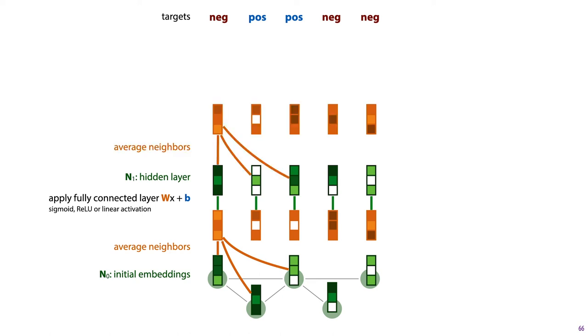We add another convolution layer, so we average over the neighbors again, and we apply another fully connected layer with another set of weights, V and C. But this time we ensure that the output dimension is the same as the number of classes, in this case 2. So we get output vectors of dimensionality 2, and we apply a softmax activation, so that they become probability vectors. And this allows us to interpret the values of these vectors as the probability of the positive class and the probability of the negative class. In other words, we have now produced a classification for every node in our network.